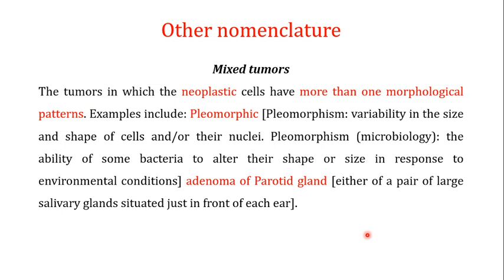There are also some other useful nomenclatures, and one important type is known as mixed tumors. Mixed tumors are those in which the neoplastic cells have more than one morphological pattern. One important example of a mixed tumor is the pleomorphic adenoma of the parotid gland. The term pleomorphism refers to variability in the size and shape of cells or their nuclei. In microbiology, pleomorphism refers to the ability of some bacteria to alter their shape or size in response to environmental conditions. With respect to tumors, pleomorphic means the neoplastic cells will be of more than one morphology.